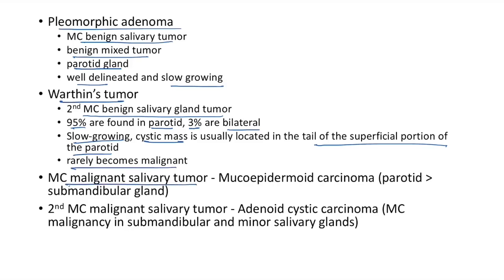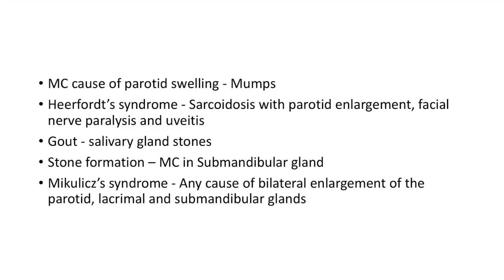The most common malignant salivary tumor is mucoepidermoid carcinoma, more common in the parotid than the submandibular gland. The second most common malignant salivary tumor is adenoid cystic carcinoma, which usually occurs in the submandibular and minor salivary glands.